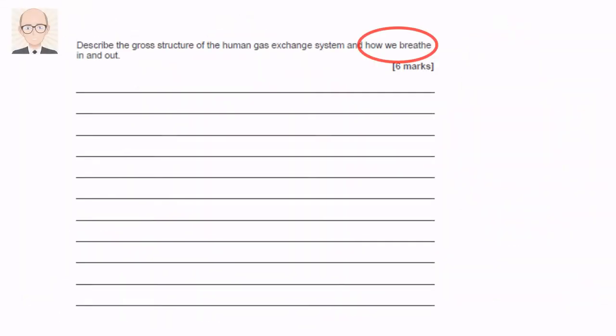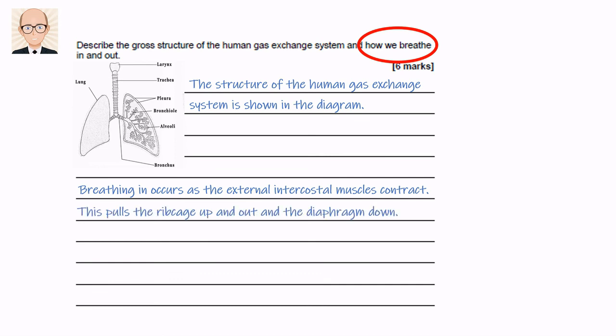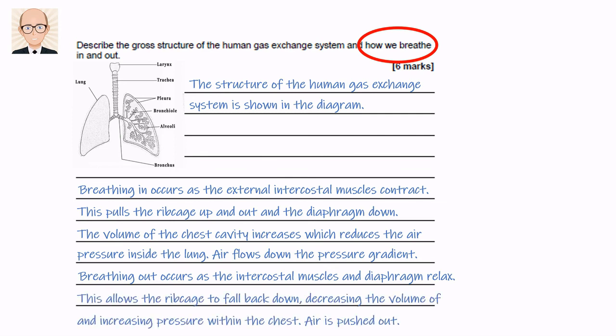So what are we going to write? If we've already got our diagram for the first half of our answer, then we can describe the ventilation process like this. Breathing occurs as the external intercostal muscles contract, pulling the ribcage up and out and the diaphragm down. The volume of the chest cavity increases, which reduces the air pressure inside the lung, so air flows down the pressure gradient. Breathing out occurs as the intercostal muscles and the diaphragm relax, allowing the ribcage to fall back down, decreasing the volume and increasing the pressure within the chest. Air is therefore pushed out.